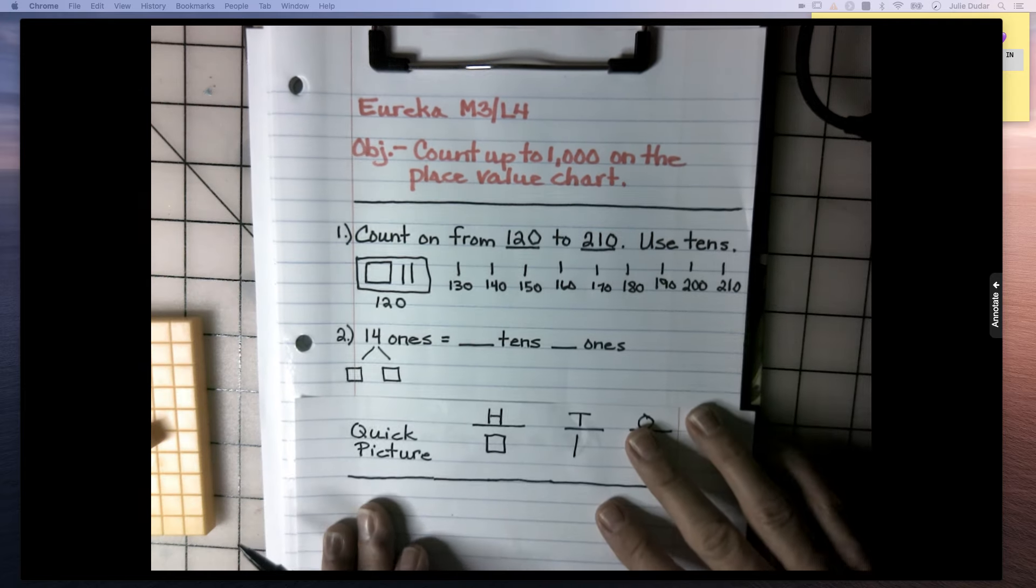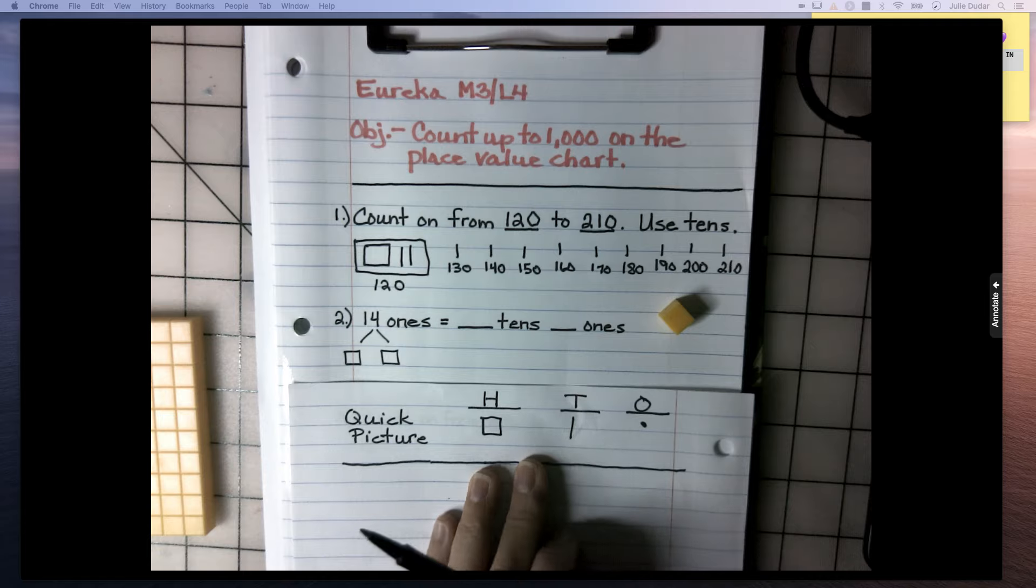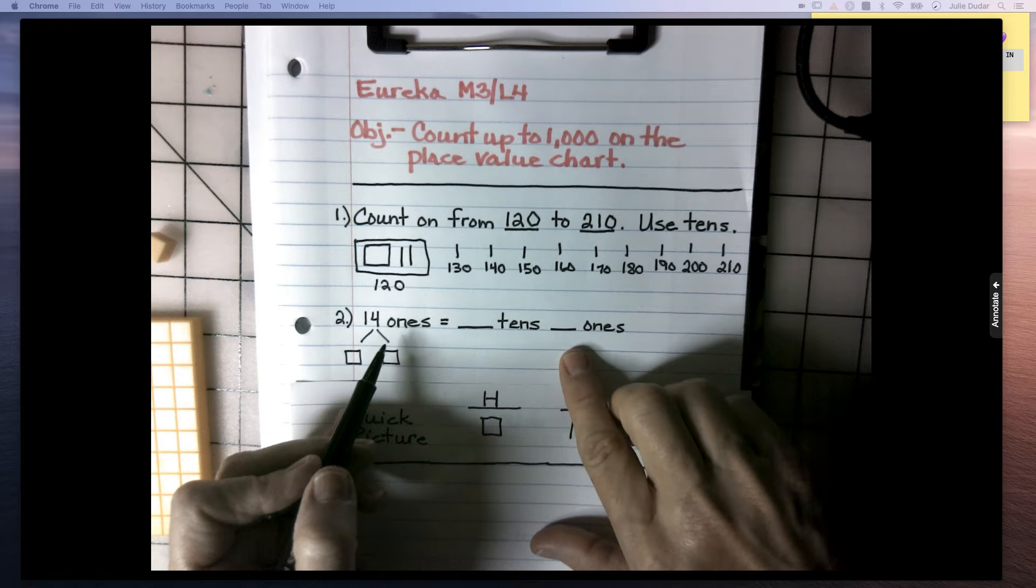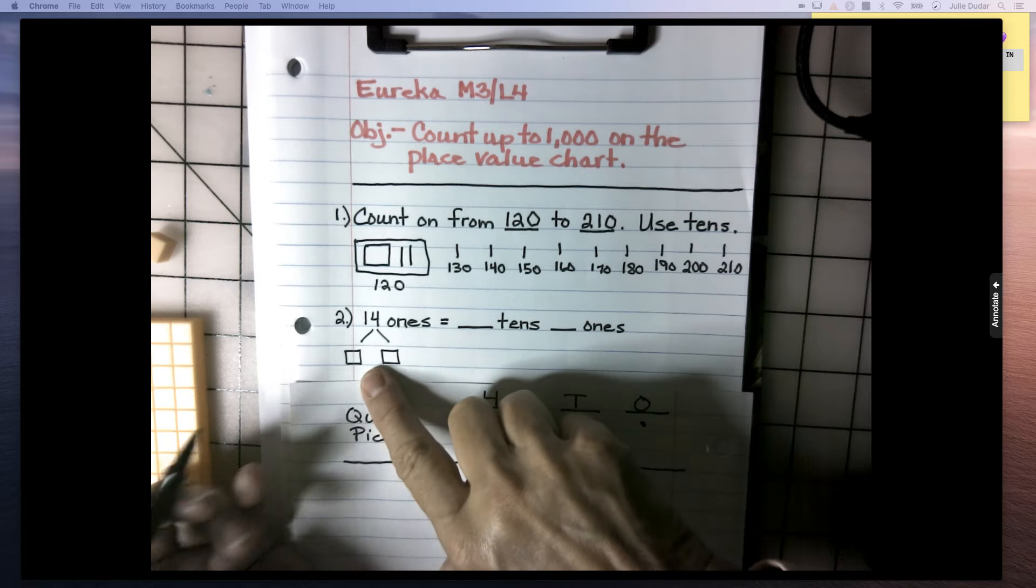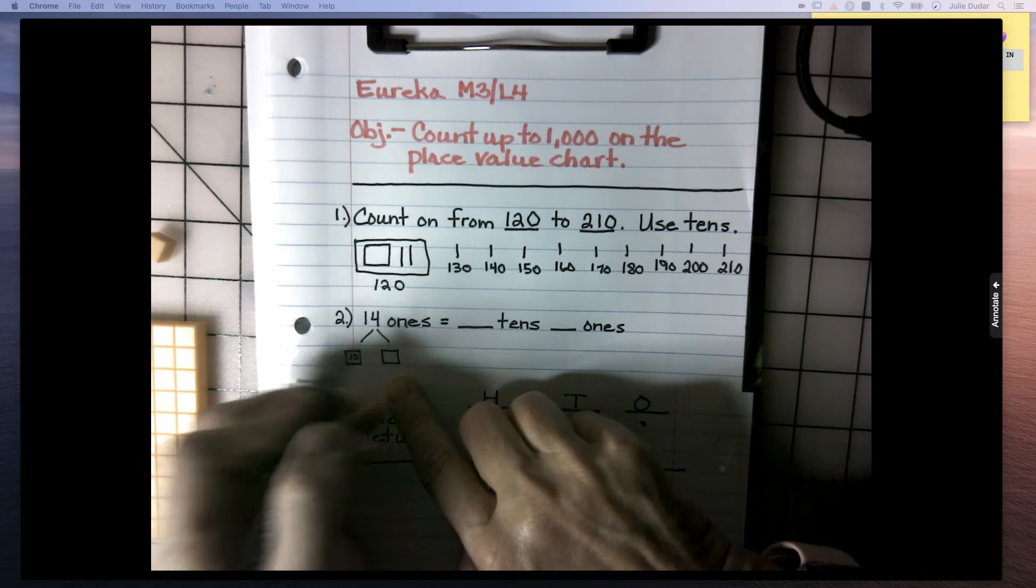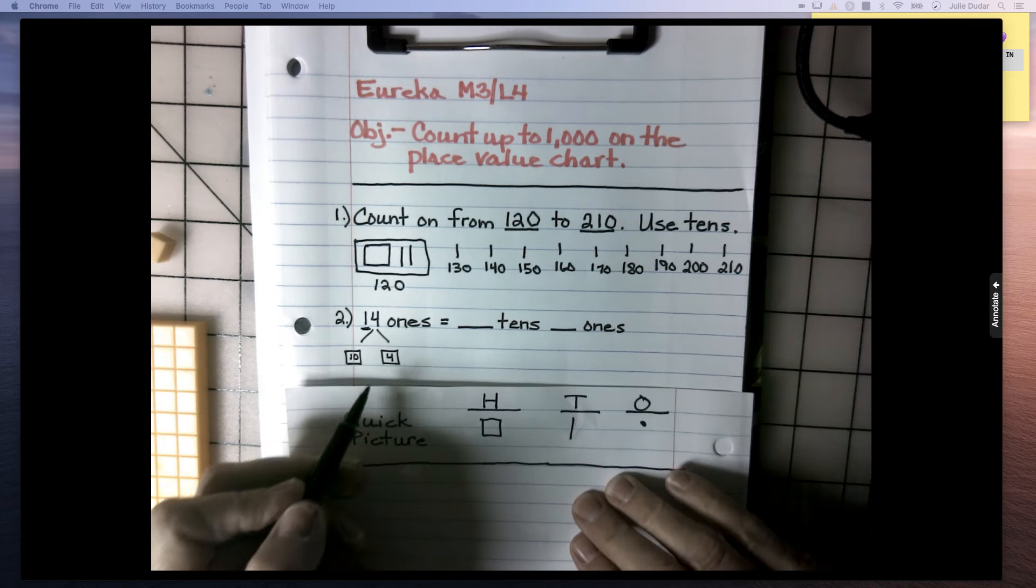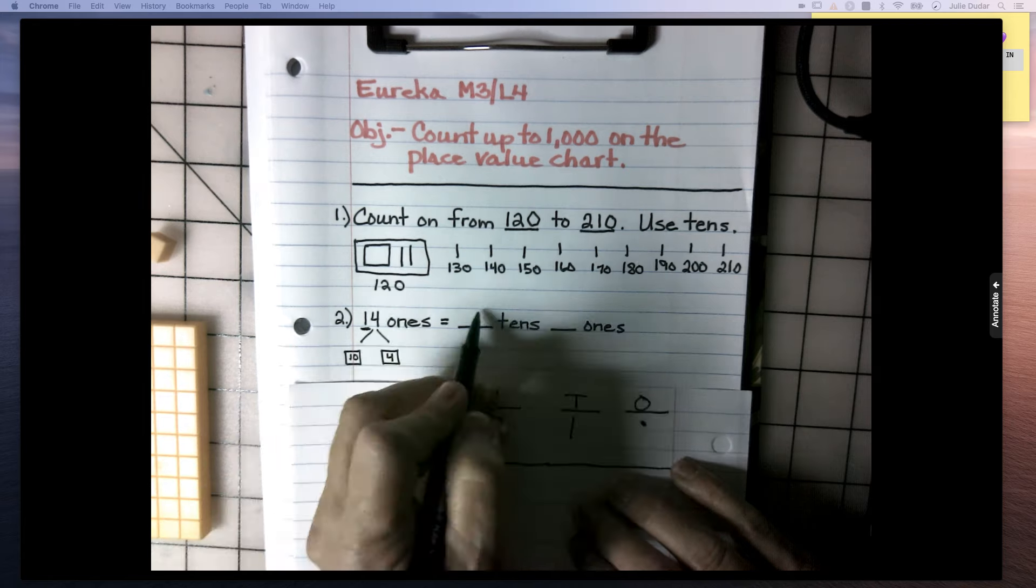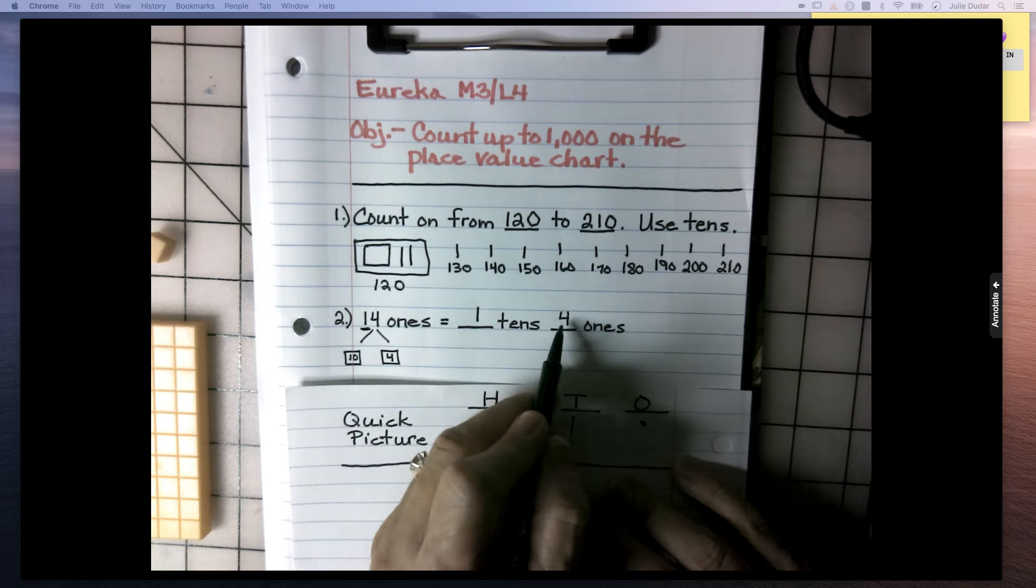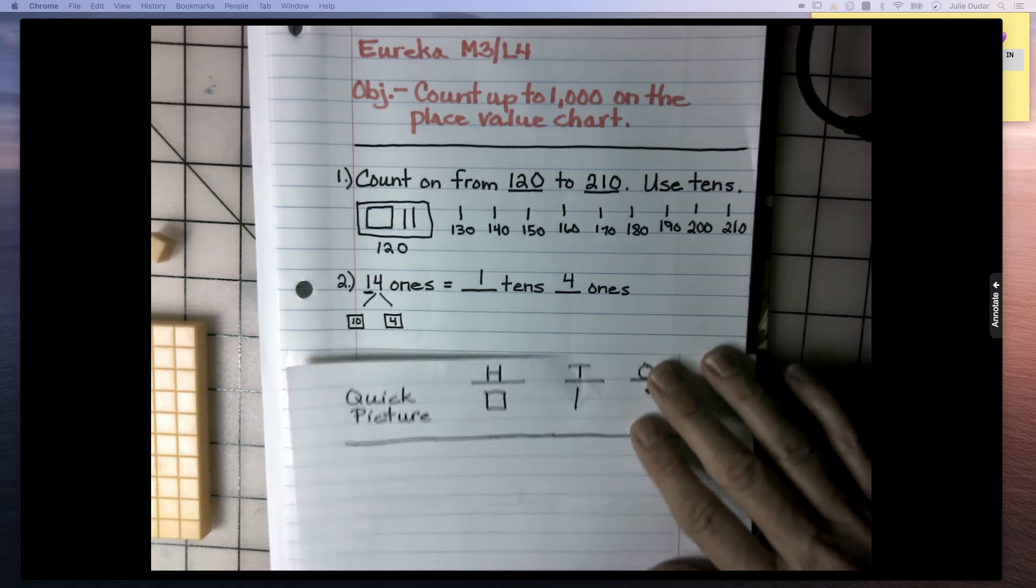All right. Here's the next one to think about. Now, 14 ones. If I have 14 of these, is there a 10 and some ones in this? Well, I can separate that out. And that is 1 ten. And we have four ones left over. So when you look at this number, that tells you how many tens there are. So there's one 10 and four ones. 10 plus 4 is 14. Okay, let's move on to the next one.